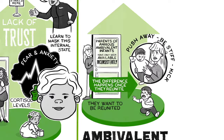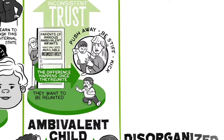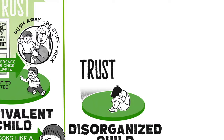There's a fourth classification called disorganized. A disorganized baby has no clear pattern to the way they respond. The person who should be providing them security is a source of pain and hurt, and that shows up in their behavior.